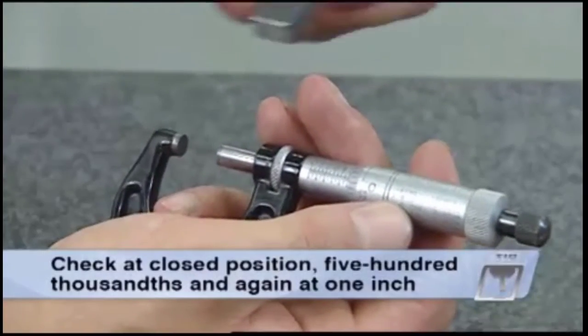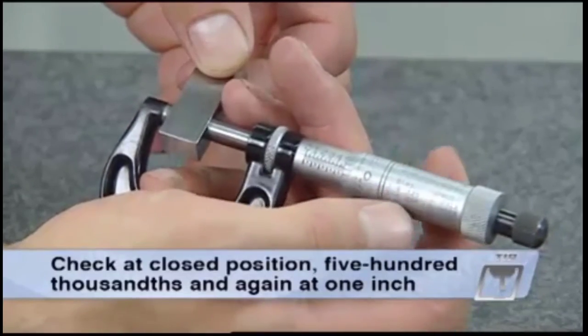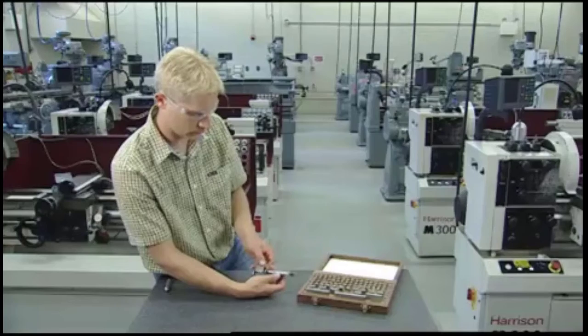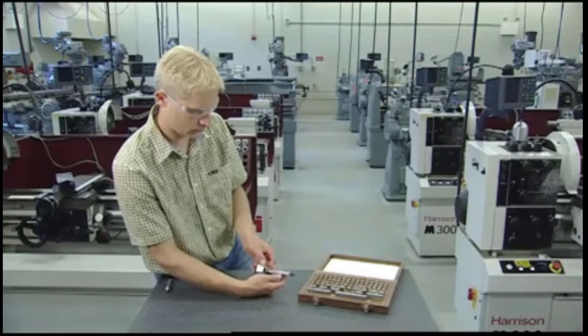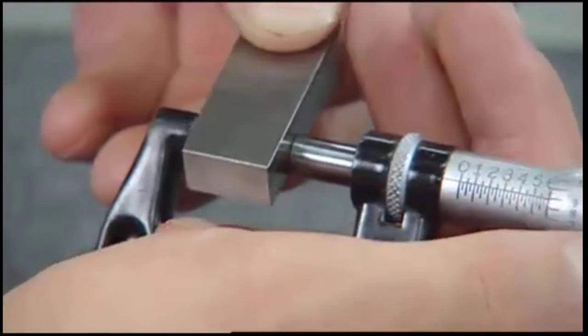At a minimum, check at closed position, five hundred thousandths, and again at one inch. If the micrometer is zeroed at the closed position but reads inaccurately at other measuring positions, the micrometer is worn beyond repair and must be discarded.